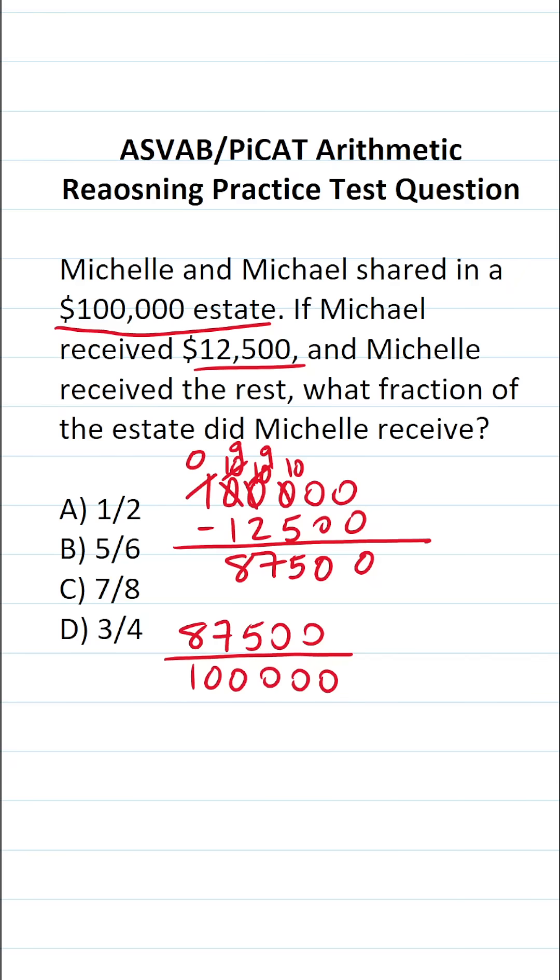Now we have to convert this to a fraction. What fraction of the estate did Michelle receive? I just wrote the first fraction. Our goal now is to reduce it as much as possible. The first thing you want to do is cross out these corresponding zeros in our numerator and denominator, such that this becomes 875 over 1000.